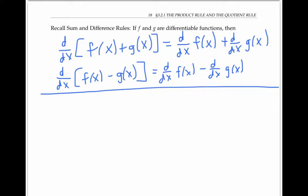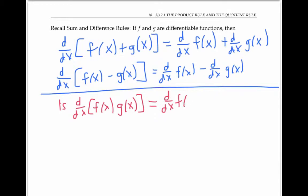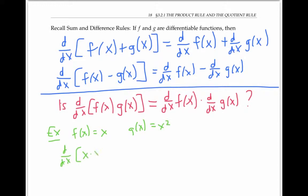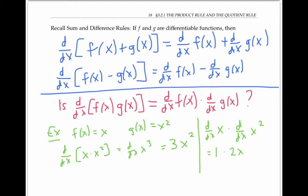So does the same sort of rule hold for products of functions? In other words, is the derivative of the product equal to the product of the derivatives? Let's look at a simple example to find out. If f(x) is x and g(x) is x², then the derivative of the product x · x² is just the derivative of x³, which by the power rule is 3x². On the other hand, the product of the derivatives gives us 1 times 2x, or just 2x. And these two things are not equal.